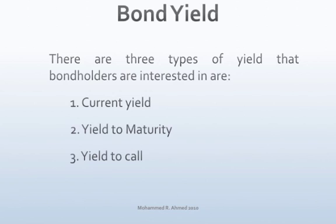There are three types of yield that bondholders are interested in: number one, current yield; number two, yield to maturity; and number three, yield to call.